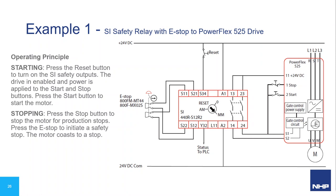Now some examples of how these products are connected together. In the first example, an emergency stop operator with two self-monitoring normally closed contact blocks operating in dual-channel redundancy is monitored by a GSR single-input safety monitoring relay. The relay outputs control the power supply to the drive and specifically the gate control circuit performing the safe torque off function. To start: press the reset button to turn on the relay outputs, the drive is enabled, and you can then press the start button. Pressing the e-stop disconnects the gate control circuit and the motor coasts to a stop.